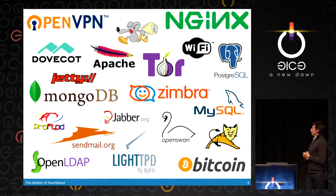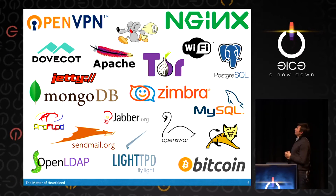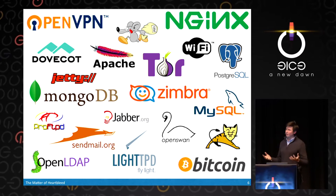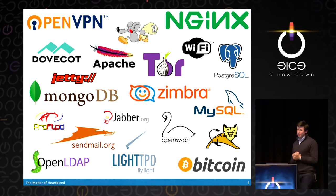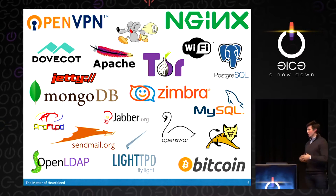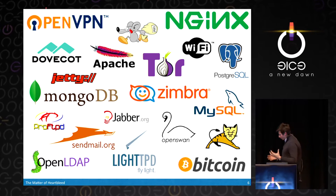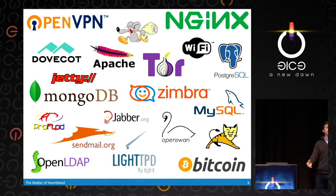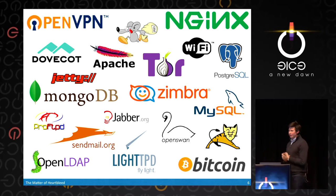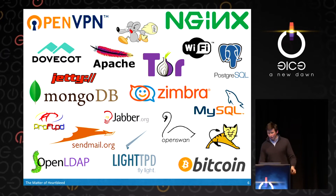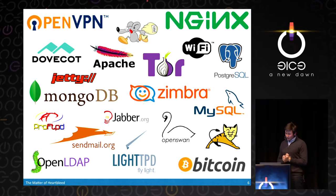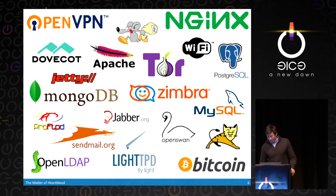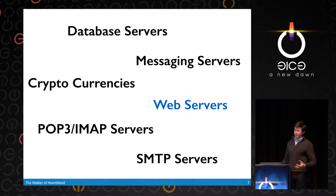This affected a very large number of software. In the case of Nginx and Apache, it exposed HTTPS sites. For the Bitcoin client, if you connected to a malicious server, they could potentially read back your private key. In the case of Tor, you might look at a relay and read other information being passed across it, or one of its short-term keys. This affected everything from web servers to mail servers to database servers.